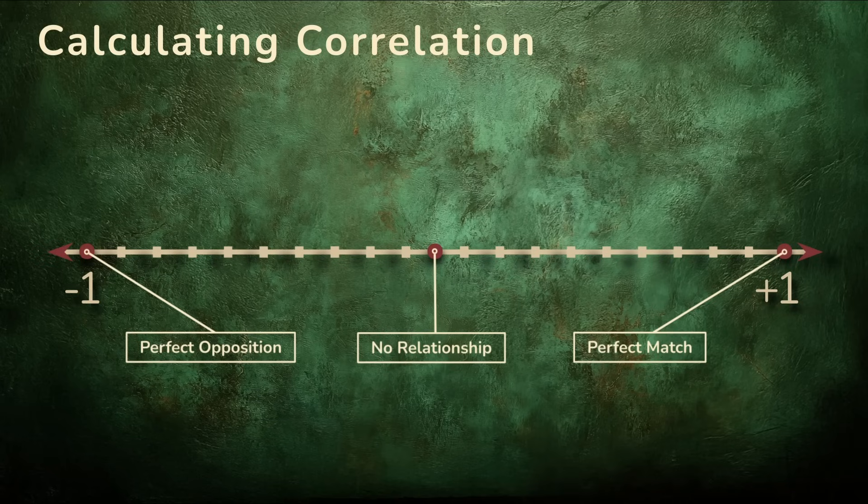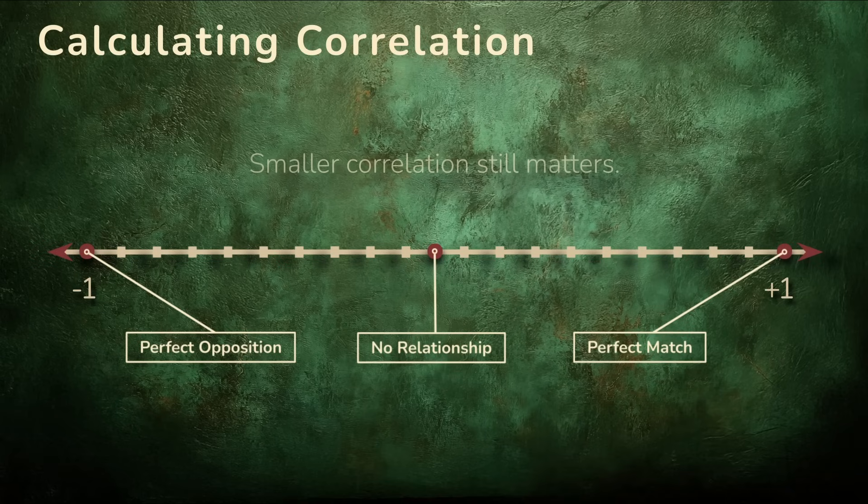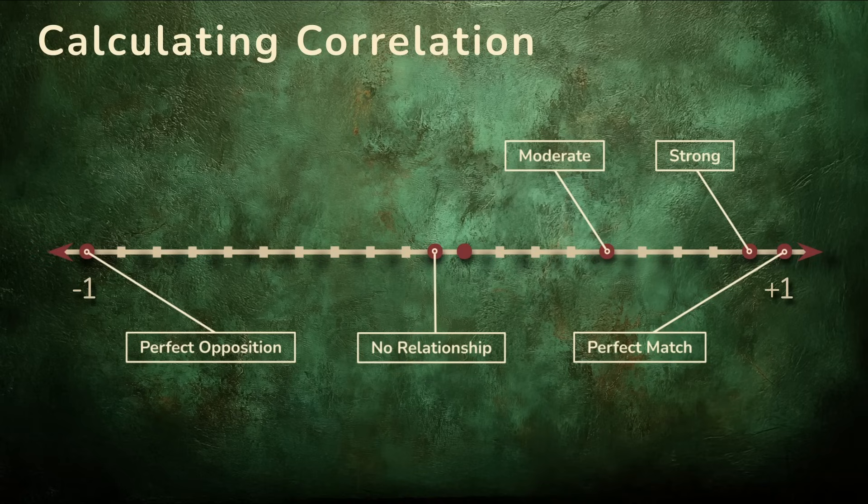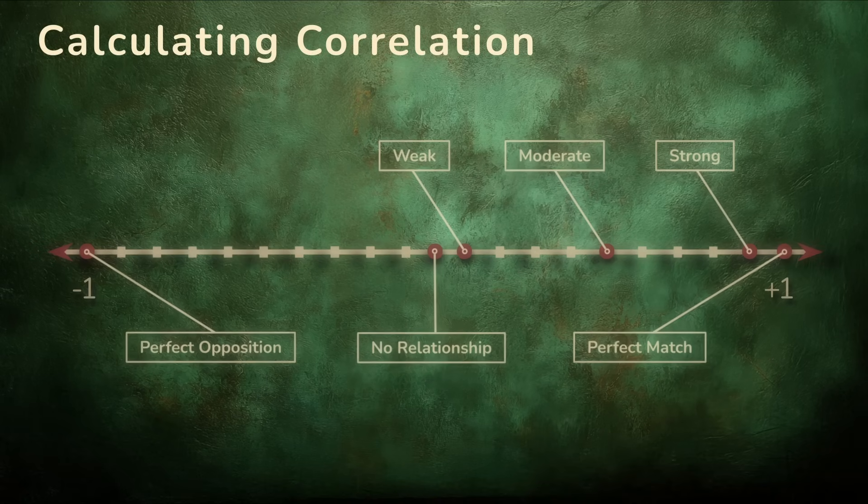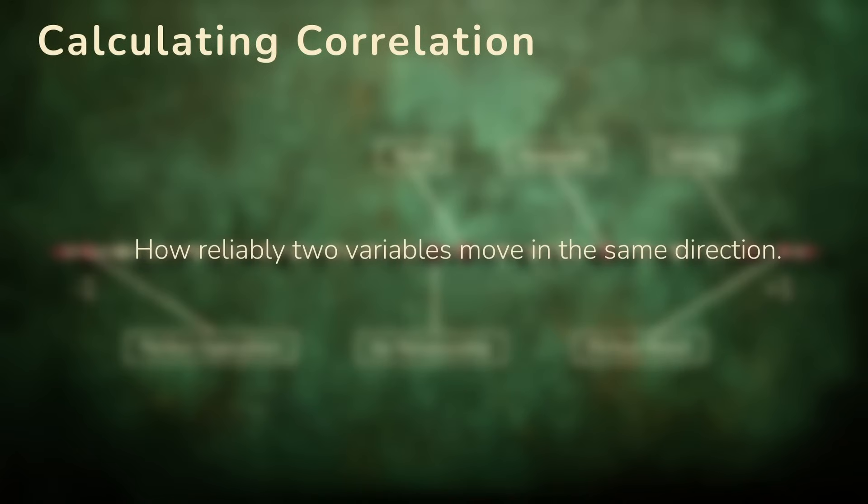In real data, you rarely see either extreme, plus or minus 1. But the smaller values still carry meaning. A correlation of 0.9 is considered very strong, 0.5 is moderate, 0.1 is weak but maybe not nothing. The correlation tells us how reliably two variables move in the same direction, not how much, and definitely not why. For that, you need more than correlation. You need a different question.